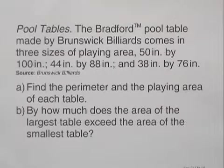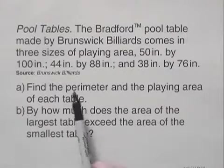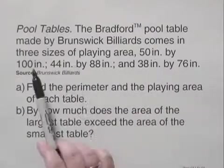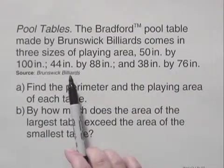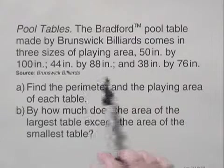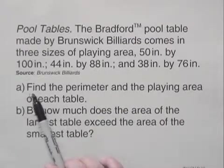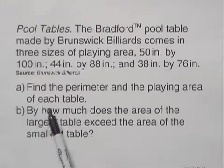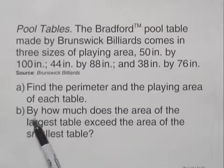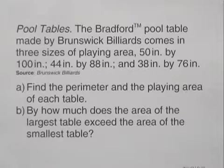The Bradford pool table made by Brunswick Billiards comes in three sizes of playing area: 50 inches by 100 inches, 44 inches by 88 inches, and 38 inches by 76 inches. We're asked, first of all, to find the perimeter and the playing area of each table, and then by how much does the area of the largest table exceed the area of the smallest table.